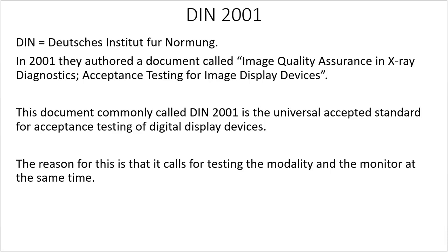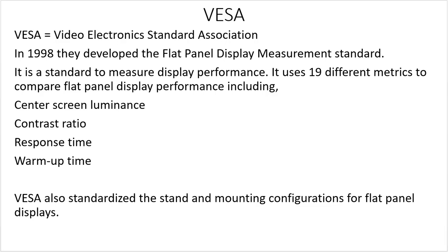Instead of plugging in a new monitor and testing it without calibrating the equipment first — which doesn't make sense — what you should do is test the equipment for its exposure values, make sure it's in range, and then test the monitor. You don't want to calibrate your monitor if the machine is way off, because once the machine gets fixed your monitor is off too. Test your modality and the monitor at the same time — it's a very smart idea.